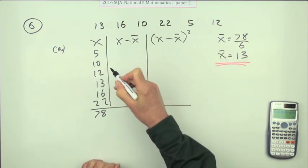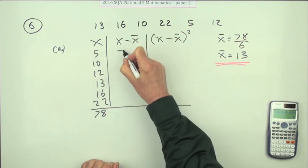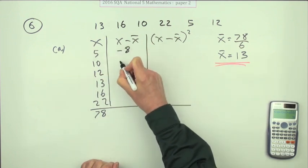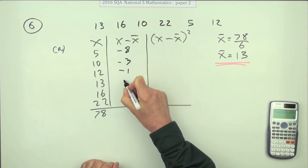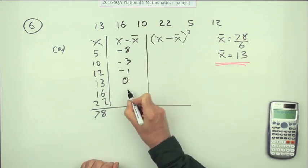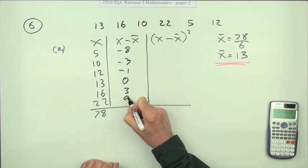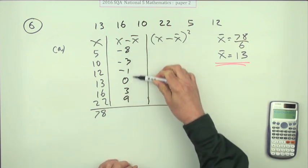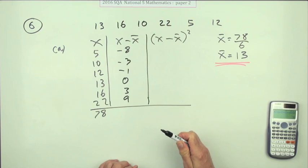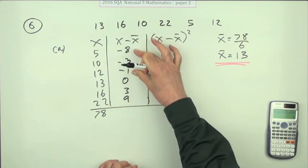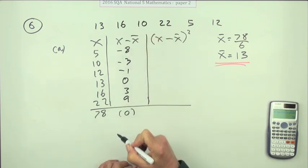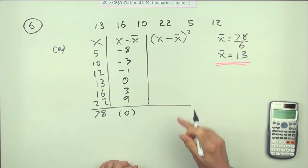Now do this bit manually. Five take away 13, that would be negative eight. Ten is three before, twelve is one before, thirteen is bang on, sixteen is three after, and twenty-two is quite a bit after, that's going to be nine. A little check you can make: do these add up to zero? We've got 12 here and negative 12, so they do. So far so good.